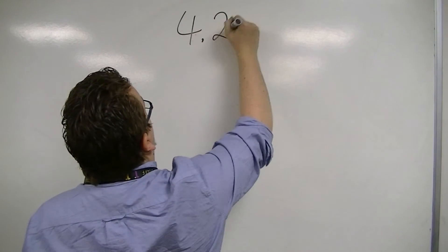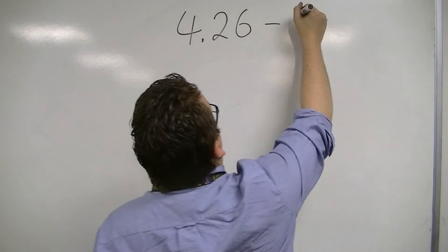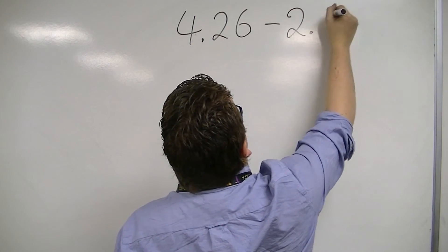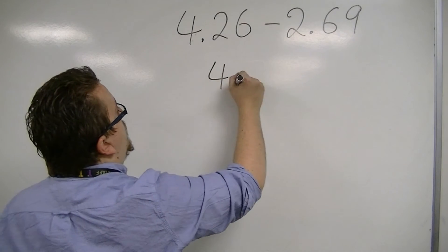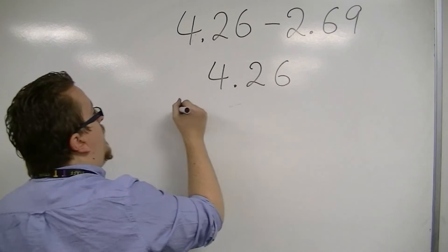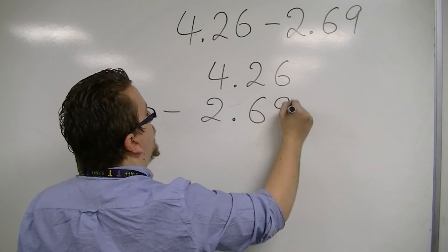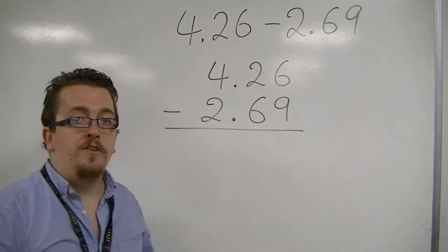So if we had 4.26 take away 2.69, then we must make sure that the decimal points line up. Much like we did for addition.